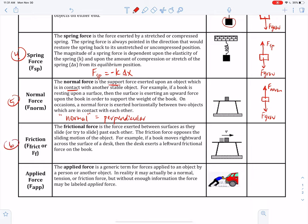Number six, friction. The frictional force is the force exerted between surfaces as they slide or try to slide past each other. The friction force opposes the sliding motion of the object. For example, if a book moves rightward across the surface of a desk, then the desk exerts a leftward frictional force on the book. So now we've got the book again.